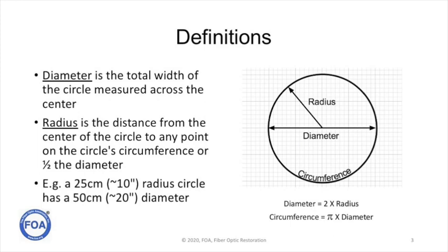The circumference of the circle, which we're not going to spend much time on here, is the diameter of the circle multiplied by pi — that infamous constant that we had to learn in mathematics, but use all the time in the real world when calculating dimensions.